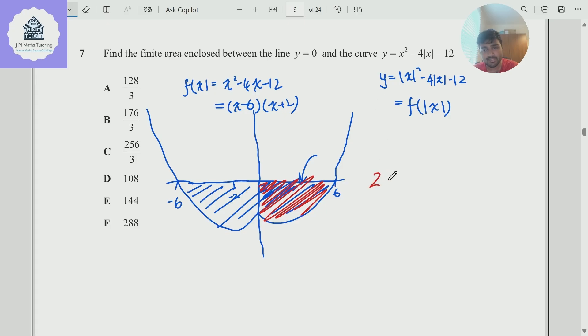And so what is that? Well, that's going to be two times the negative, because of course this is underneath, the integral from 0 to 6 of f of x dx. So x squared minus 4x minus 12 dx. And this is a pretty straightforward integral to compute.